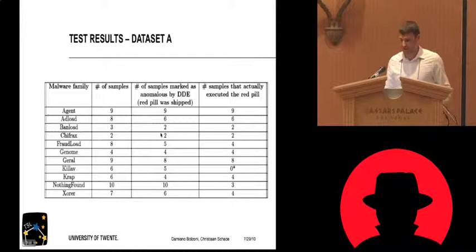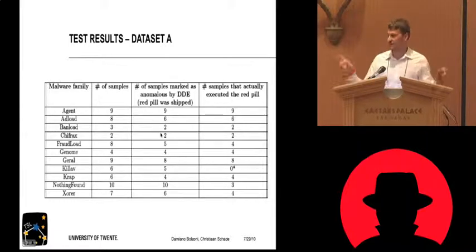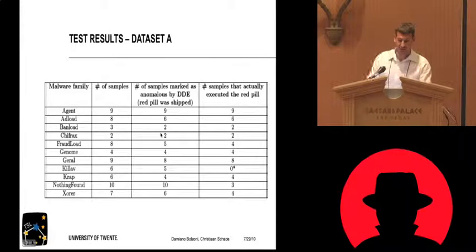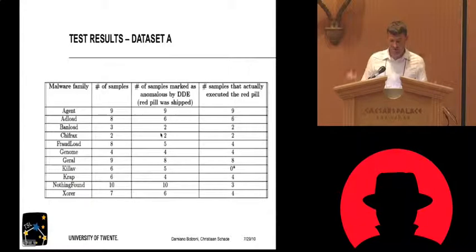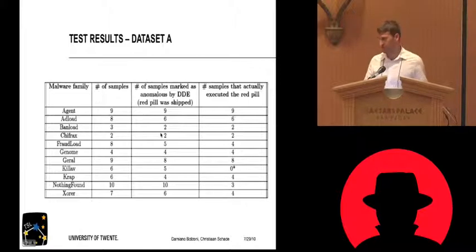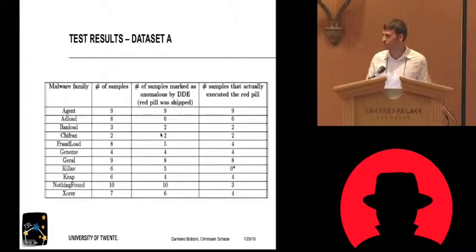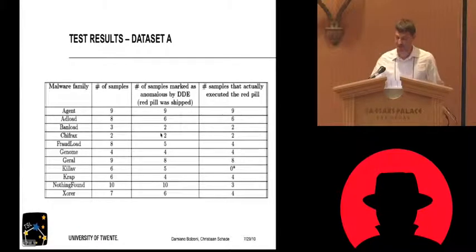This is Dataset A, where we know it's malware and we know they are bad. These are the families — the family name comes from the classification used to put together the data set. You can see the number of samples. There is a family called 'nothing found,' where CWSandbox says this is not malware, but actually it's doing something. Three out of ten of those samples actually executed our thing and we could see that they were not good. So there is a kind of mismatch — maybe because CWSandbox is an automatic process, they missed it.